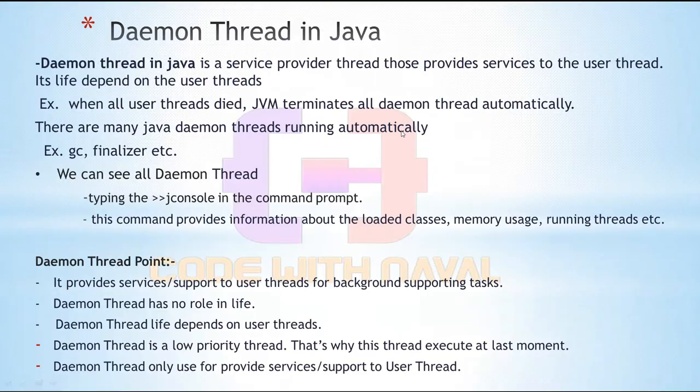Let's first understand what is a Daemon thread. A Daemon thread in Java is a service provider thread that provides a service to the user thread. Its life depends on a user thread. When all user threads die, JVM terminates all Daemon threads automatically.